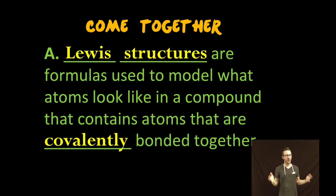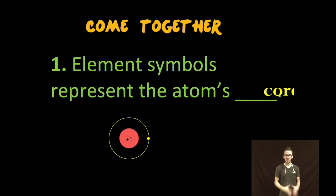So first, what the heck is a Lewis structure? These are just formulas that we use to model what atoms look like in a compound that contain atoms that are covalently bonded together. Just to model representation, help you to better understand and visualize. Now, recognize in these Lewis structures, the element symbols are going to be representing the atom's core. So as you take a look at your screen, we're going to be moving away from the CVR model and focusing on just those valence electrons.